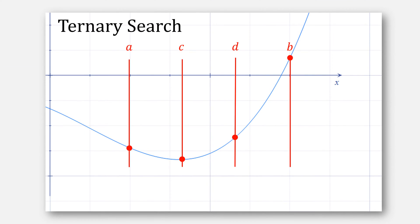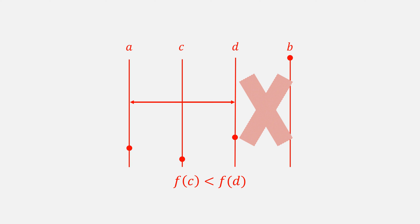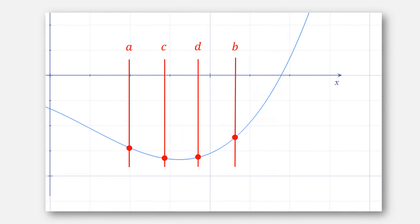Recall ternary search. We check if F of C is less than F of D. When it is, we eliminate the rightmost interval and replace our value for D with B. We then come up with new values for C and D. This was our old value of C. It would be helpful if this could be used again, for example, calling this value D and coming up with some new value C somewhere between A and D.